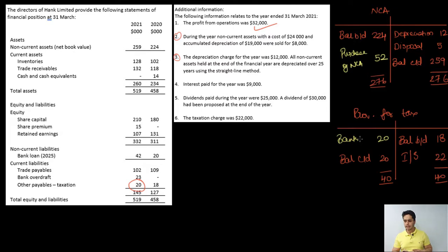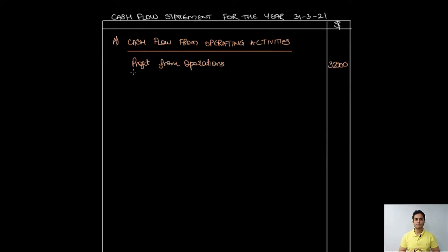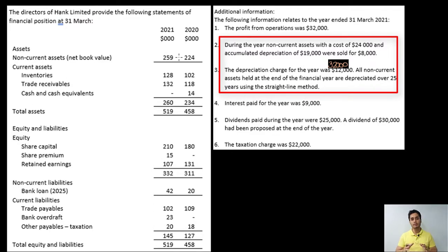We've calculated our missing numbers — let's now prepare the cash flow statement. I'll begin with cash flow from operating activities. Step one: start from profit from operations. Step two: make adjustments for non-cash items — transactions in the income statement that have no cash effect. In this question, first I have the depreciation charge, which was deducted as an expense in the income statement, so I add it back to reverse its effect. I also have the gain on disposal of asset, which would have been credited to income, so I deduct that gain to reverse its effect.